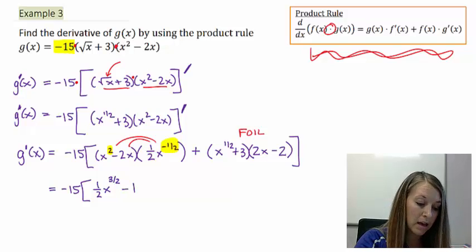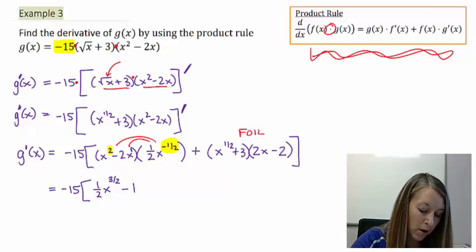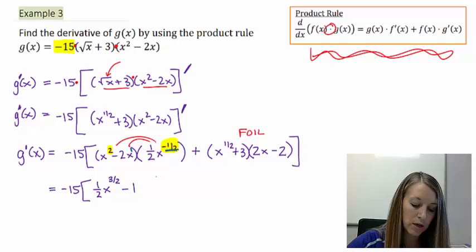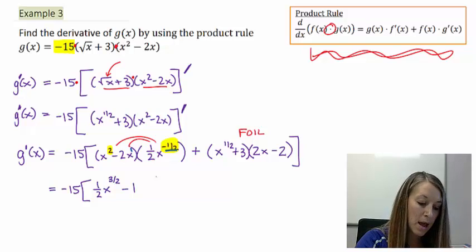Again, I add my exponents. This was originally x to the first power. So when I add that to negative one-half, that gives me a positive one-half. So this is like negative one x to the one-half power.